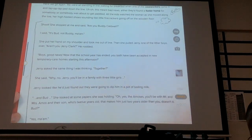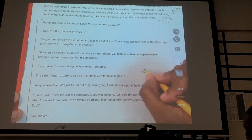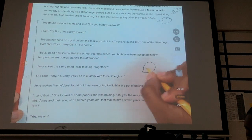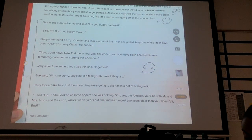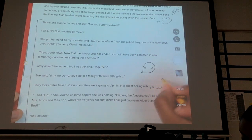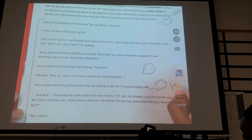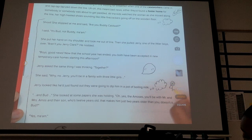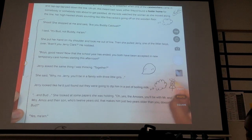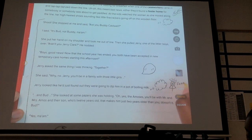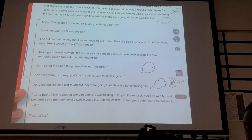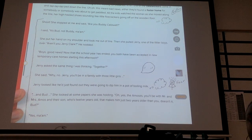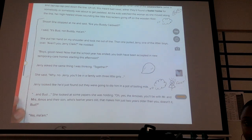Jerry looked like he just found out they were going to dip him in a pot of boiling milk. And Bud, she looked at some paper she was holding. Oh yes, the Amoses. You'll be with Mr. and Mrs. Amos and their son, who's 12 years old. That makes him just two years older than you, doesn't it, Bud? Yes, ma'am. So if I had to pair all of this, what would it be? I can hear some of you saying in my mind, this is all dialogue. And there's also some thoughts in here. This is also an emotion, an emotion of fear.